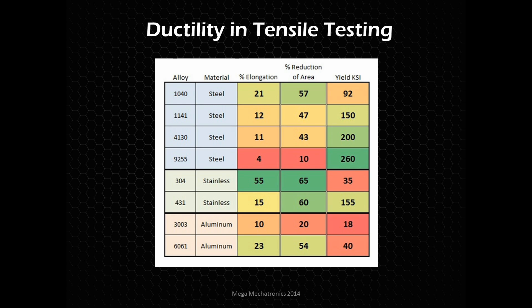Looking at some material examples: 1141 steel has 12% elongation and 47% reduction of area. 4130 steel has 11% and 43% — pretty close — but 4130 is quite a bit stronger, so you'd probably prefer it for similar ductility but higher strength. 9255 is very strong but not very ductile. And the 304 versus 431 shows a huge difference — the material alloy makes a big difference in ductility, and what makes an even bigger difference is the heat treatment.